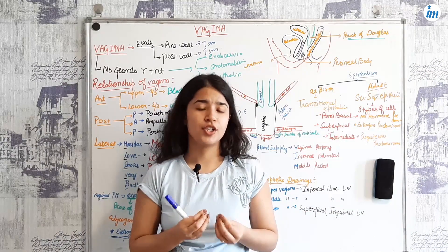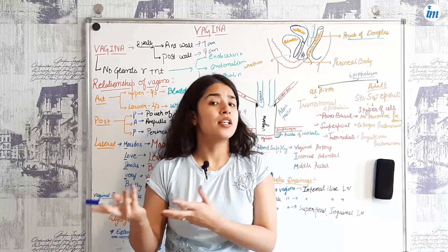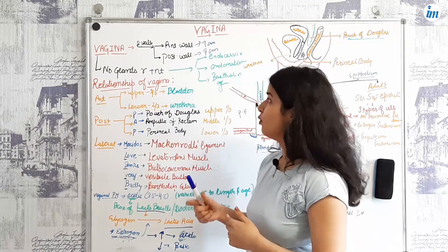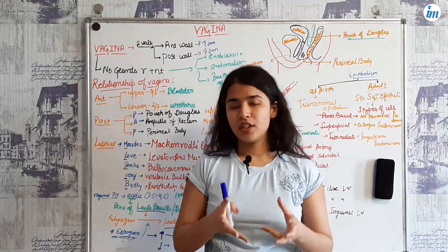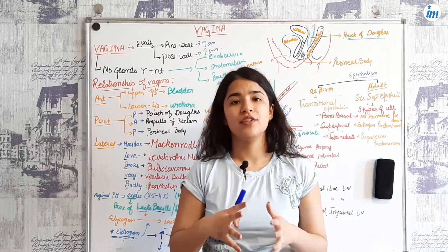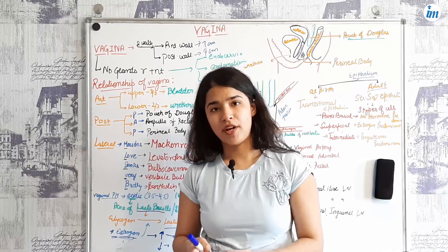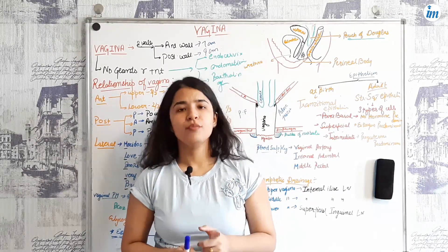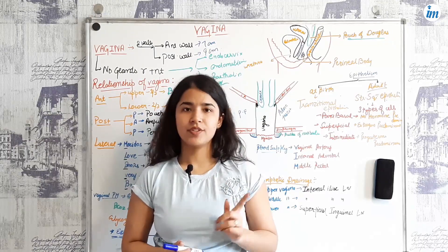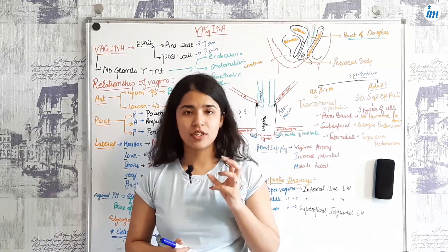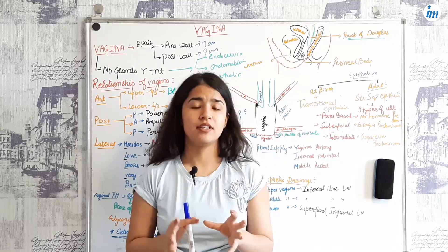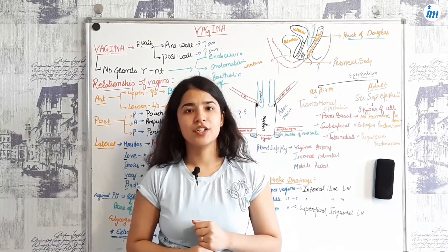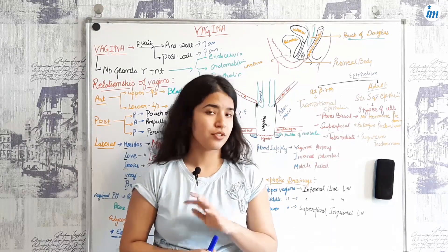Since the vagina doesn't have any gland, the secretions that come to the vagina are from the endocervix, endometrium, and the Bartholin's gland. There was also a question asked in previous years: what is the main organ that physiologically contributes towards vaginal secretion? The answer is cervix — just remember it.